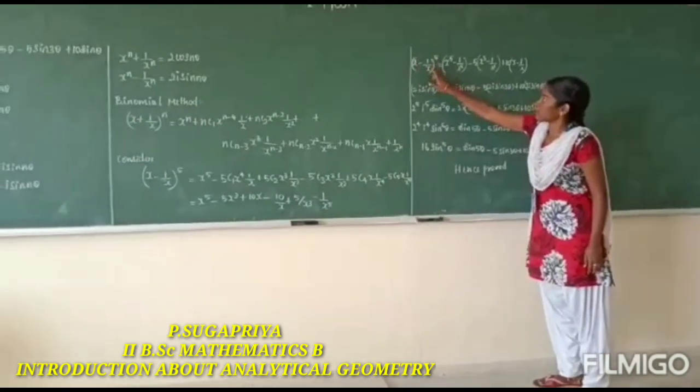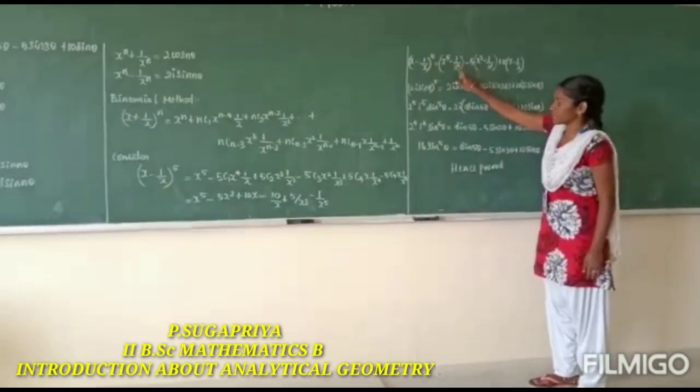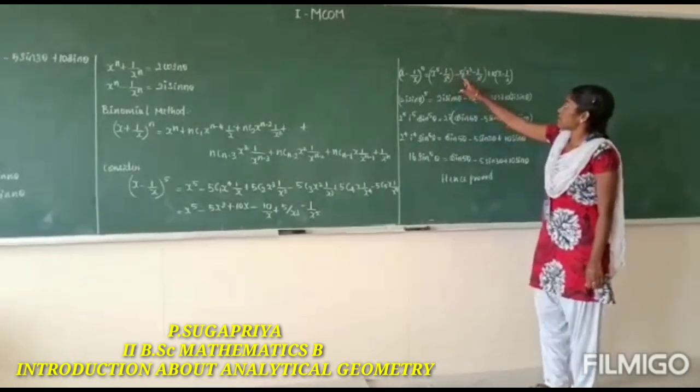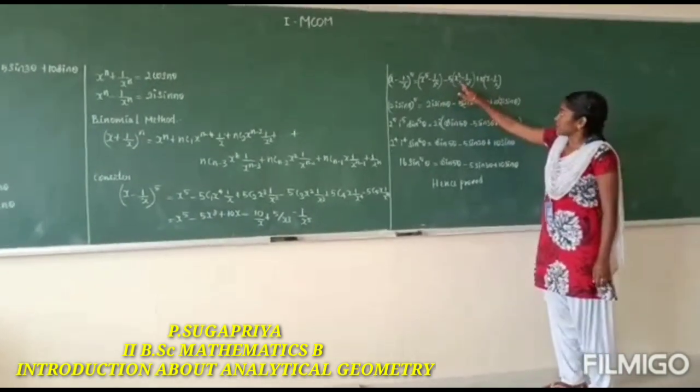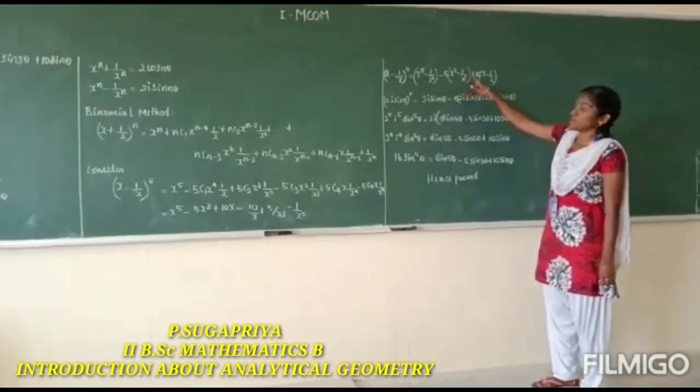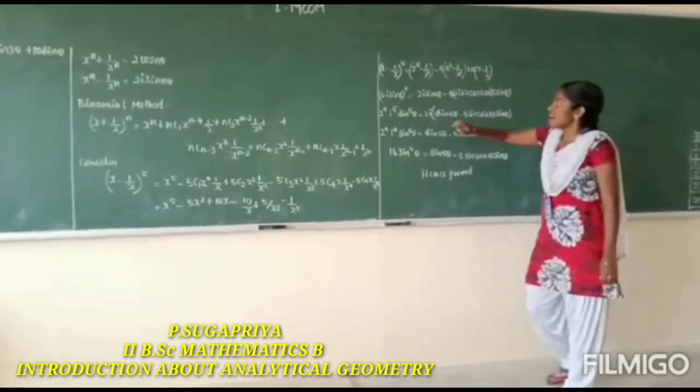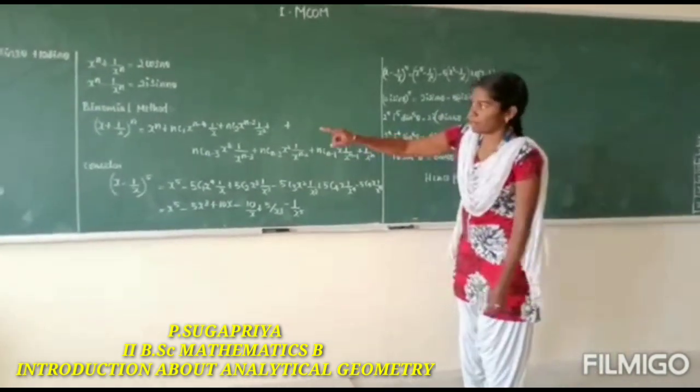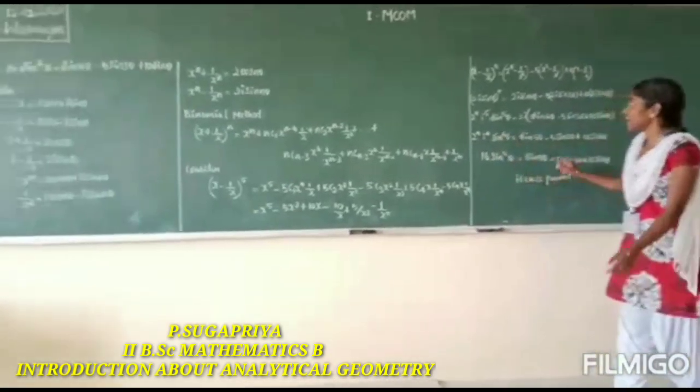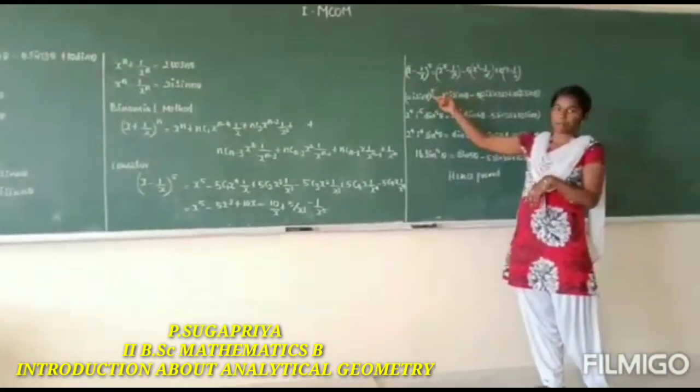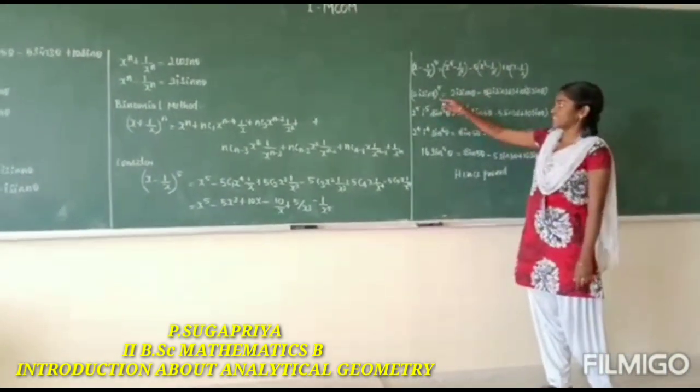We get (x minus 1 by x)^5 equals x^5 minus 1 by x^5 minus 5 times (x^3 minus 1 by x^3) plus 10 times (x minus 1 by x). We know that x minus 1 by x equals 2i sin theta, so we substitute 2i sin theta here.